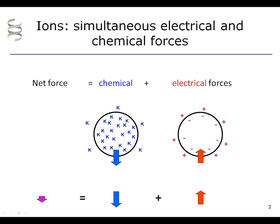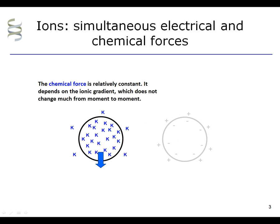The net force on a single ion is the sum of the chemical force plus the electrical force on that ion. Each ion is undergoing simultaneous electrical and chemical forces. The chemical force is relatively constant. It depends on the ionic gradient, which does not change much from moment to moment.